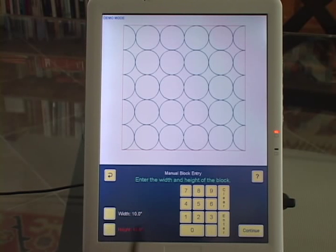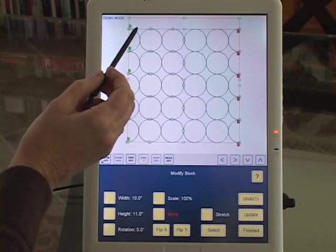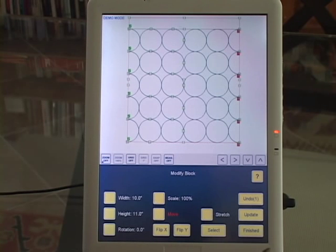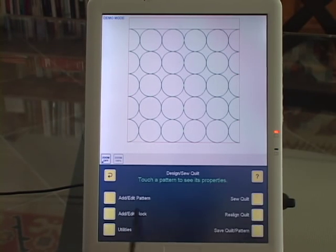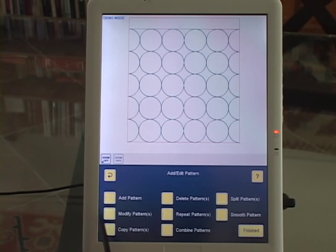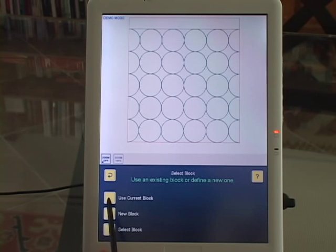Enter rectangle manually. The width is going to be 10 inches, the height is going to be 11 inches, and I'm going to move it up so that the extra inch is at the top. Finished, finished. Add Edit Pattern, Add Pattern, Pantograph Pattern, use current block.